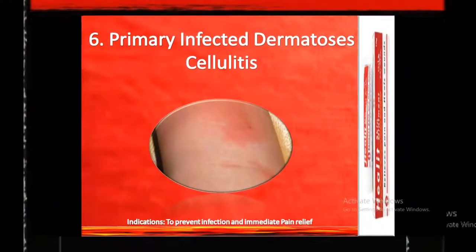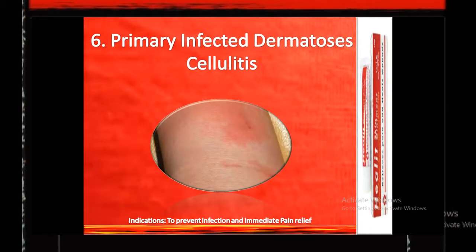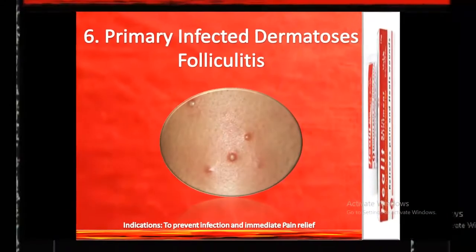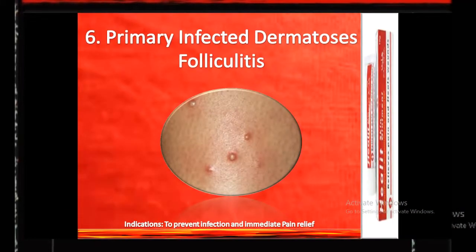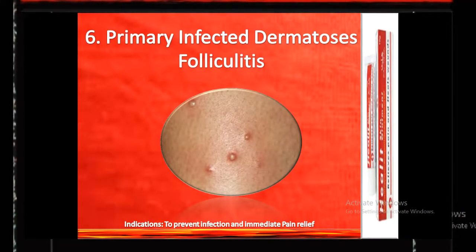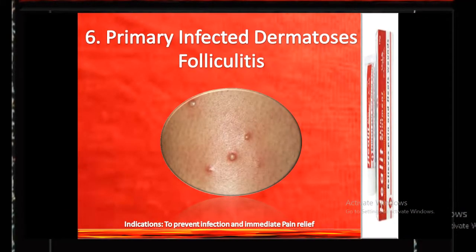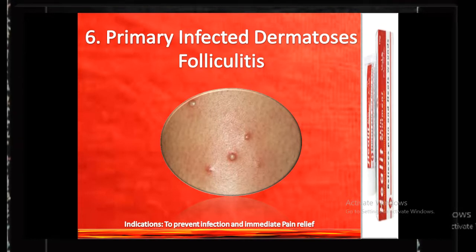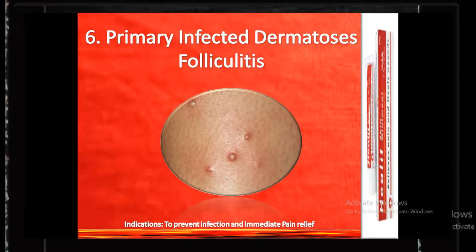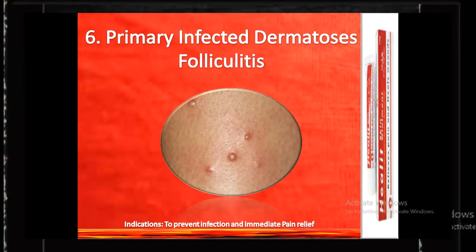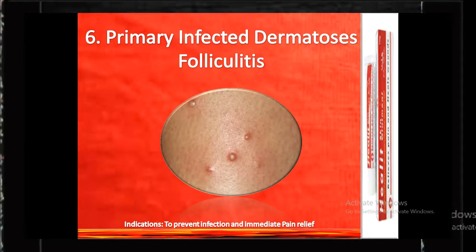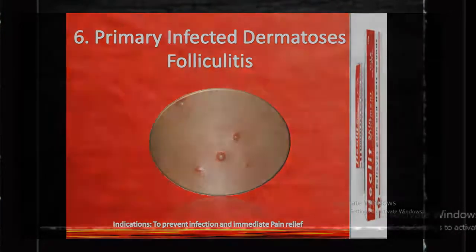Cellulitis is a potential bacterial infection of the skin. Folliculitis is a condition in which the hair follicles become inflamed, whereas a furuncle is a deep infection of the hair follicles leading to an abscess formation.